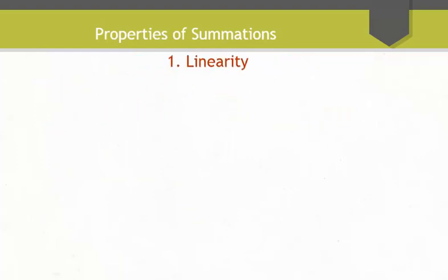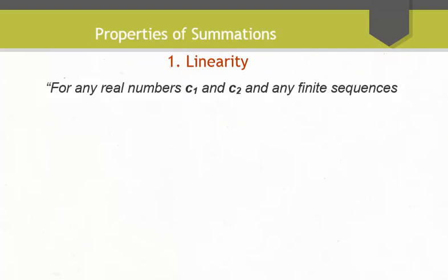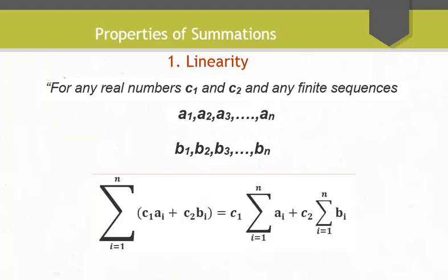Let us start with the first property, the Linearity property. It states that for any real numbers c1 and c2 and any finite sequences a1, a2, a3 up to an and b1, b2, b3 up to bn, we have a specific summation relation. This property is known as the Linearity property of Summations and is also obeyed by Infinite Summation Series. This property is a combination of usual rules of arithmetic rewritten in summation notation.